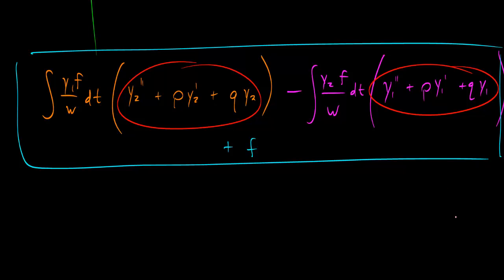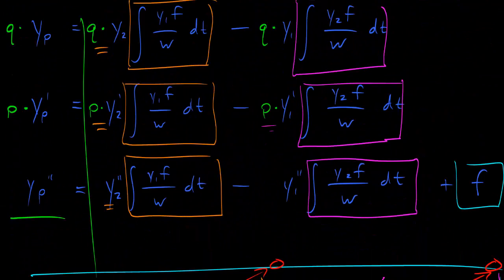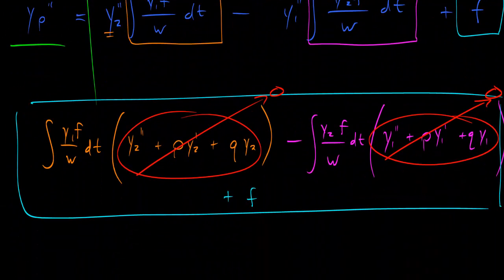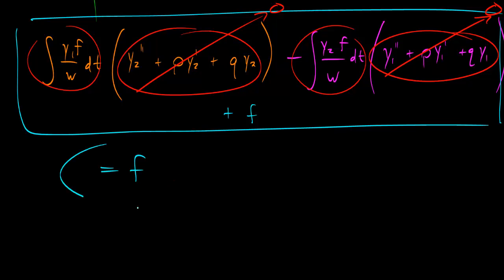Remember that y1 and y2 are solutions to the homogeneous part of the differential equation. That means y1 double prime plus p times y1 prime plus q times y1 equals 0, and similarly for y2 — this was one of our assumptions from the start. So both bracketed expressions equal zero, and it doesn't matter what the antiderivatives are — multiplying by zero gives zero. All that remains is f, exactly as we wanted.